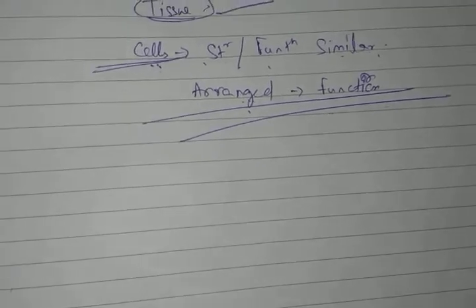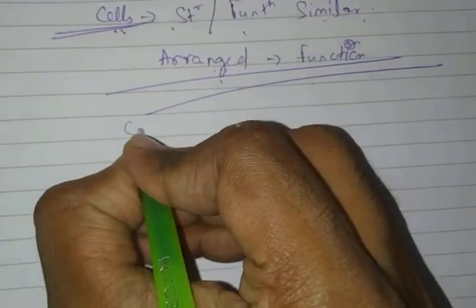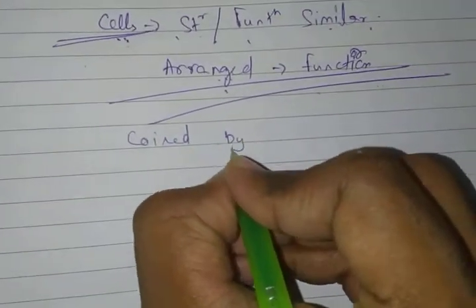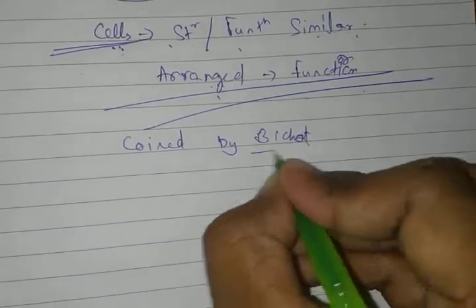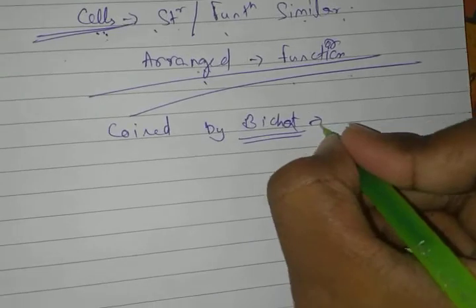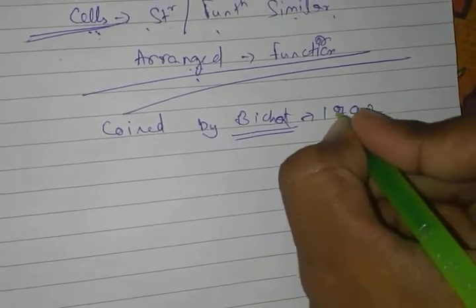The tissue, the word tissue was coined by a biologist named as Bichat, in 1792.